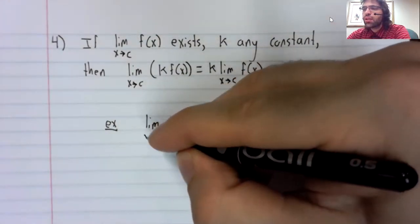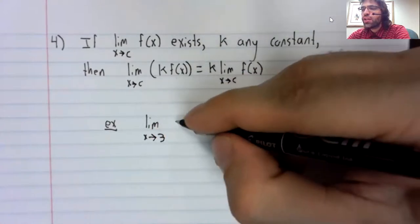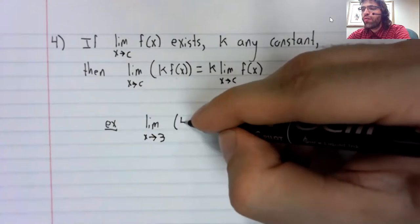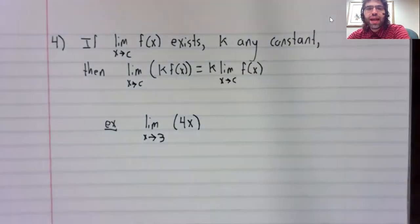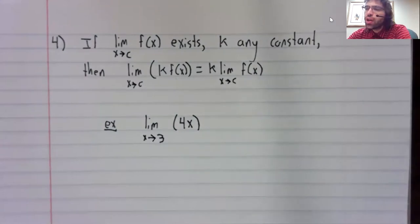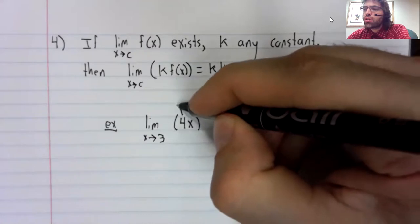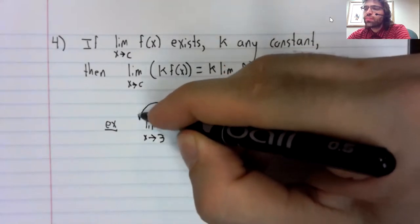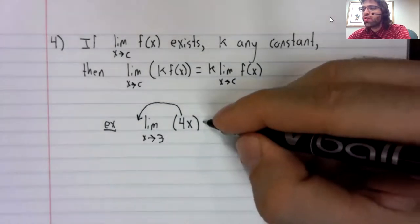So for example, the limit as x approaches three of four times x. What this rule was saying is that you can take a constant and move it to the front of the limit.